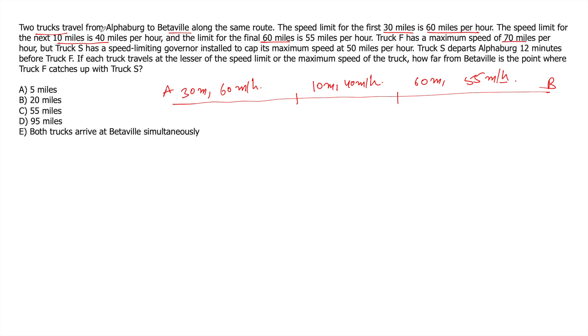F has a maximum speed of 70 and truck S has a speed limiting governor installed to cap its maximum speed at 50. So for F, the maximum limit is 70 miles per hour. And for S, the maximum is 50 miles per hour. Truck S departs 12 minutes before F. So let's say truck S starts at 10 a.m. from this point.